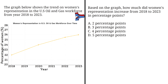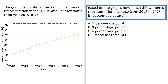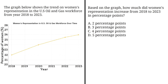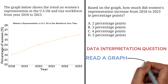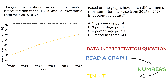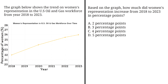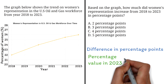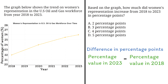The graph below shows the trend in women's representation in the U.S. oil and gas workforce from 2018 to 2023. Based on the graph, how much did women's representation increase from 2018 to 2023 in percentage points? This is a great example of a data interpretation question on the GED Social Studies test. These types of questions often require you to read a graph, pull out the right numbers, and use a bit of math to find the answer. To solve this, we find the difference in percentage points for women's representation between 2023 and 2018.